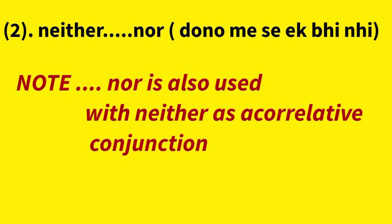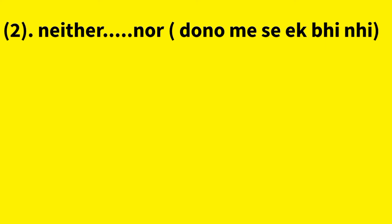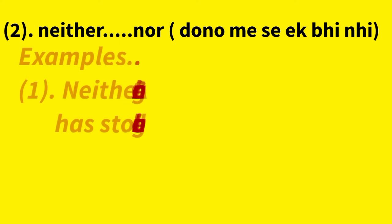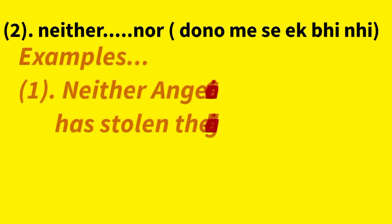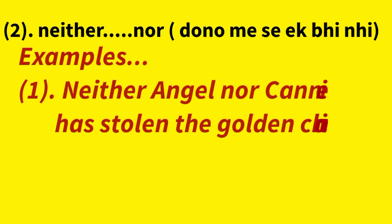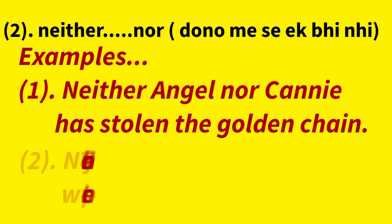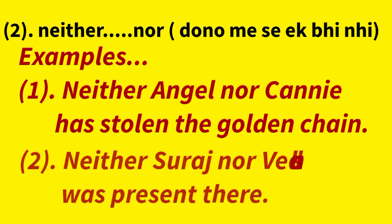Neither...nor means 'dono me se ek bhi nahi.' Examples: Neither Angel nor Canny had stolen the golden chain — na to Angel na to Canny ne golden chain churaya. Second example: Neither Suraj nor Vedans were present there — na to Suraj na to Vedans wahan present tha, dono me se koi bhi nahi.